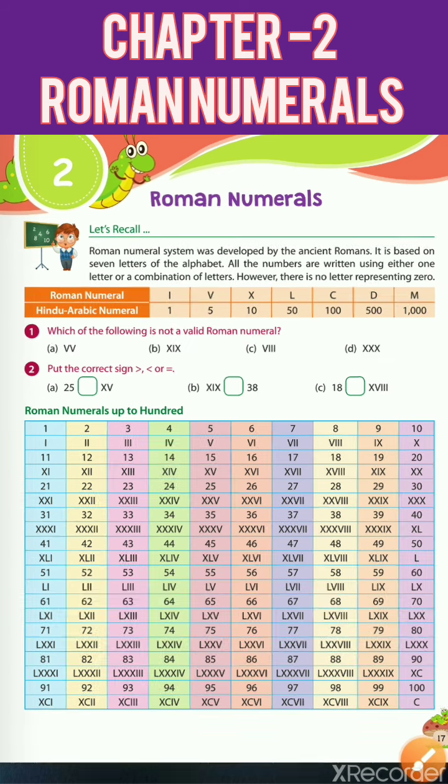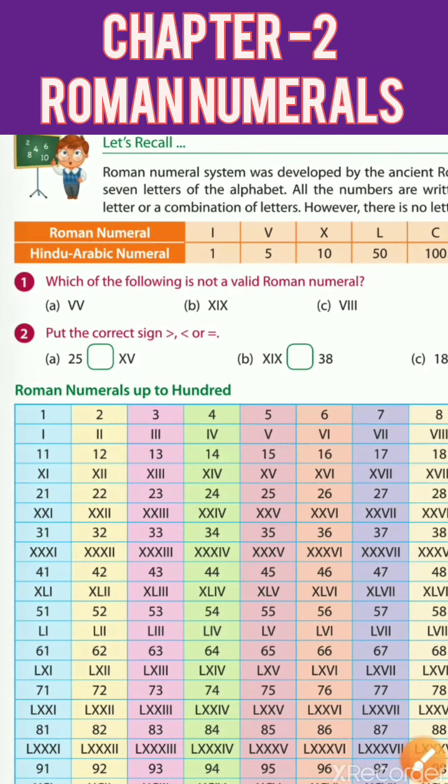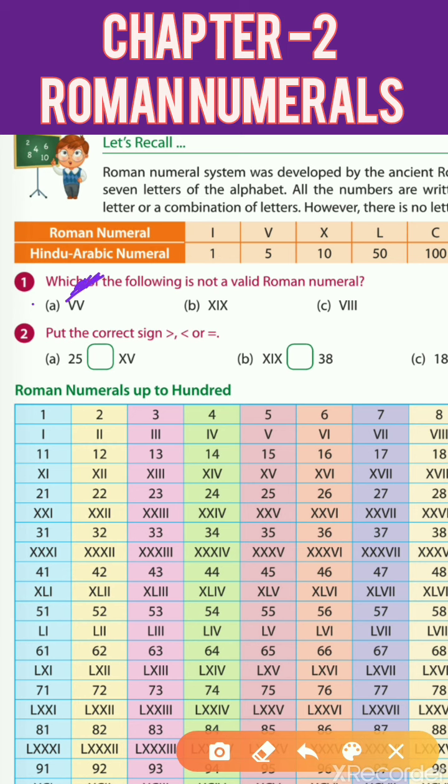Now one question is which of the following is not a valid Roman numeral. This is not a valid Roman numeral. We cannot repeat V two times. That is why it is not a valid Roman numeral.